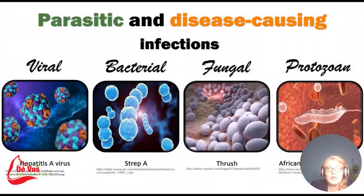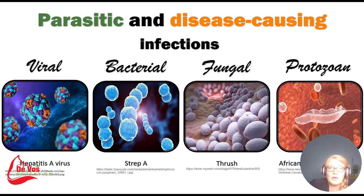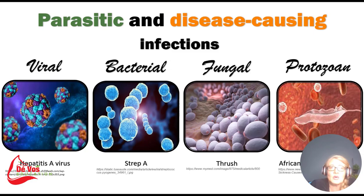Hepatitis A is a viral infection affecting the liver, typically transmitted through contaminated food or water. Strep A, caused by Streptococcus, is a bacterium responsible for various infections including strep throat and skin infections. Thrush is a fungal infection caused by Candida, resulting in white patches on the tongue and mucous membranes of the mouth. African sleeping sickness is caused by a protozoan called Trypanosoma and is transmitted by the tsetse fly, leading to neurological symptoms and disruptions in wake and sleep cycles.